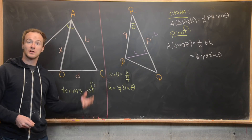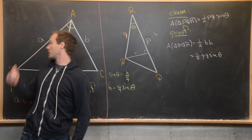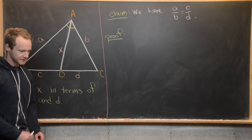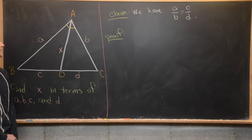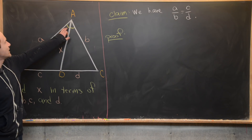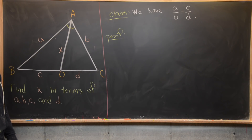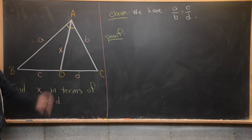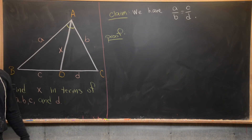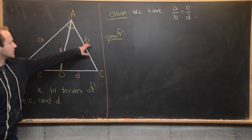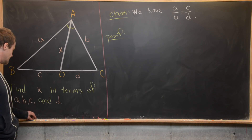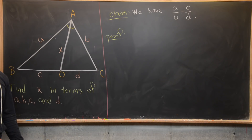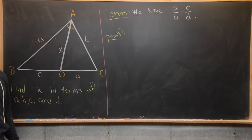Now we're going to look at one more result before we look at our main goal. For our next preparatory result we can use the diagram we already have. This is sometimes known as the Angle Bisector Theorem, and it says that if we have an angle bisector inside a triangle, then we know the ratio of the sides of the two triangles that are created. Specifically, a over b is equal to c over d.